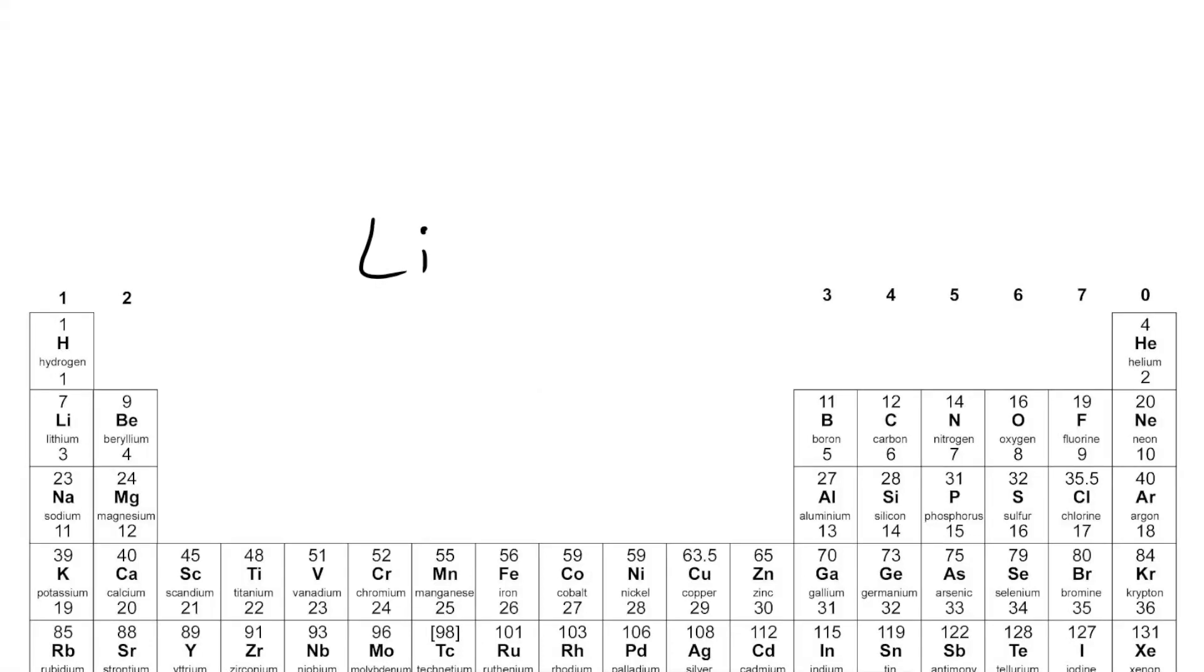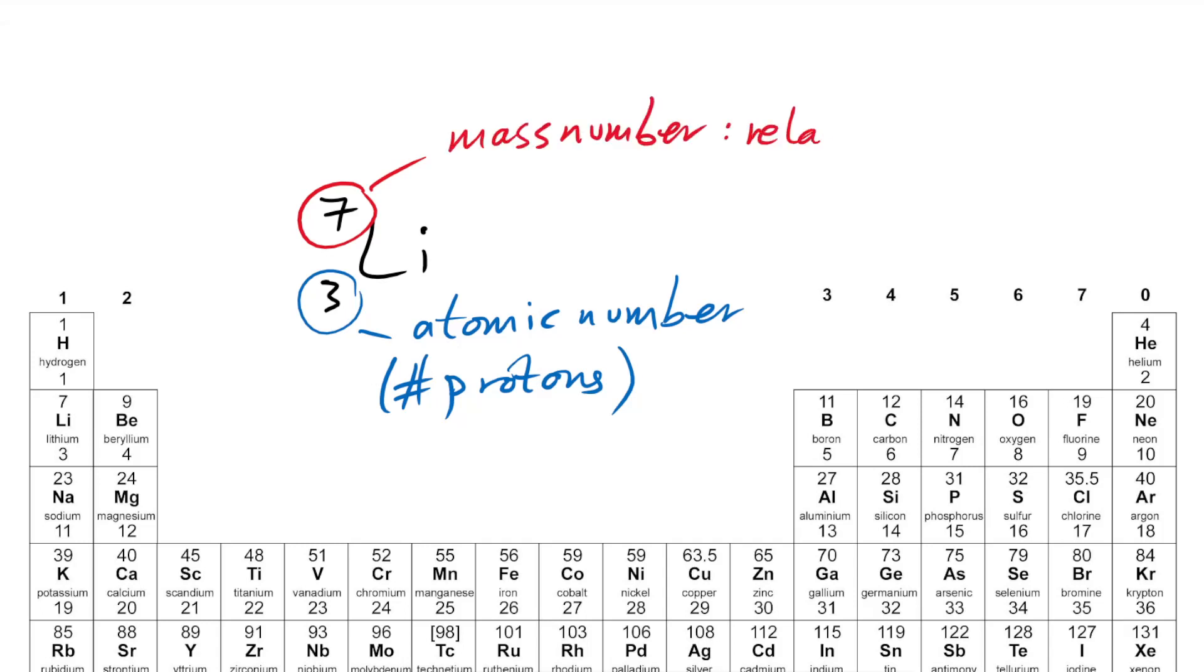You should remember from GCSE that when we look at the periodic table, we can get a lot of information about an element and its atoms. The symbol gives you the name of the element. The bottom number is the atomic number, which is just the number of protons in the nucleus. The top number is the mass number, or more accurately the relative atomic mass, which is the number of protons plus the number of neutrons.